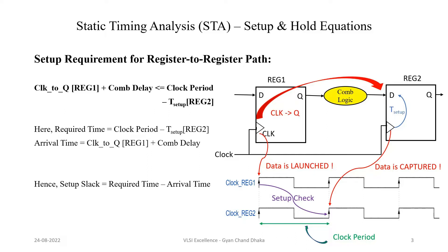Now let's analyze the setup requirement for a register-to-register timing path. Here we have the launch flop and the capture flop. The data is launched from the start point of the launch flop, which is the clock pin, and it will end at the data pin of the capture flip-flop.